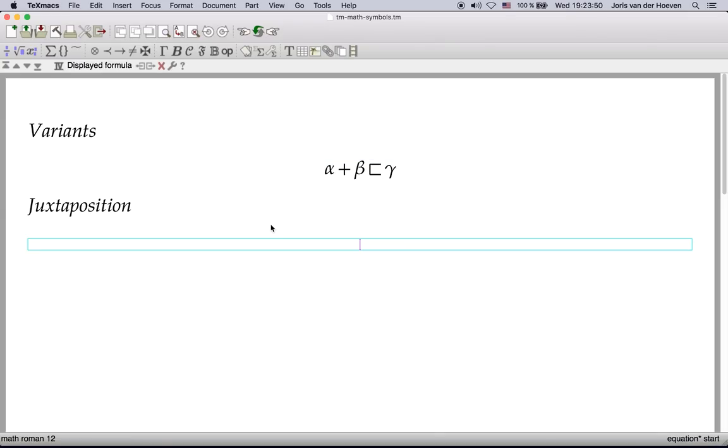The second principle is the possibility to combine various symbols into new ones. For instance you can obtain an arrow by typing minus followed by superior. Typing superior twice we obtain a double headed arrow.